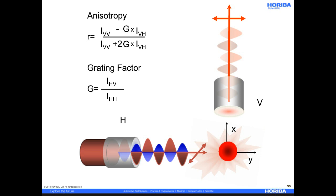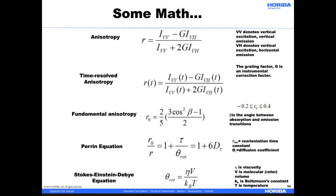Here we can see some equations that are useful for analyzing anisotropy results. The same anisotropy calculation can be applied to entire fluorescence decays, giving us time-resolved anisotropy. From the time-resolved anisotropy decay, we can get a reorientational time constant, and then use that in the Perrin equation and the Stokes-Einstein-Debye equation to estimate properties such as diffusion coefficient, local viscosity, and molecular volumes. These correspond to very important information when looking at applications such as protein or molecular binding, polymer aggregation, and other local environment studies in complex solutions and materials.